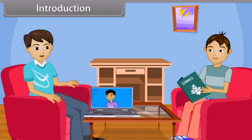Video chat can be done with the help of internet. It is an application of a communication system. In a communication system, there are three major components: sender, communication channel, and receiver. In case of video chat, I am the sender, internet is the communication channel, and my friend is the receiver. Now I understand and I want to know more about this. Students, today we will study more about the communication systems.